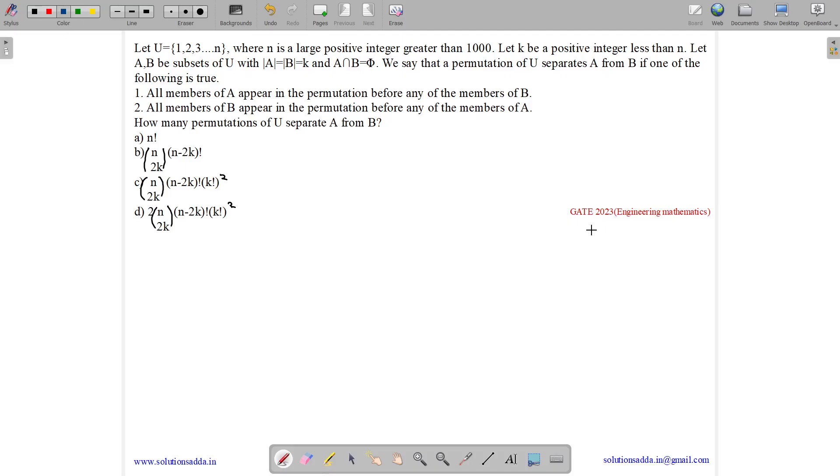This question belongs to engineering mathematics subject and was asked in GATE CSE 2023. The question states: let U equals to 1, 2, 3 up to n where n is a large positive integer greater than 1000.